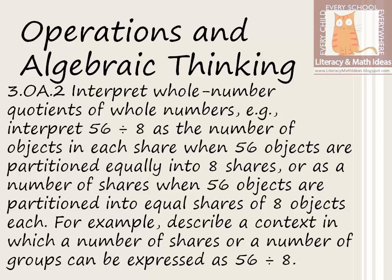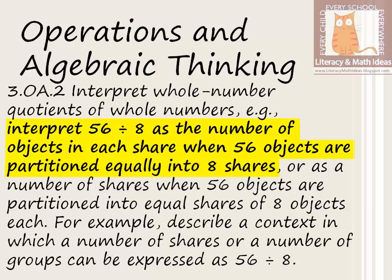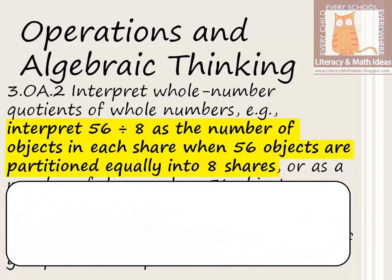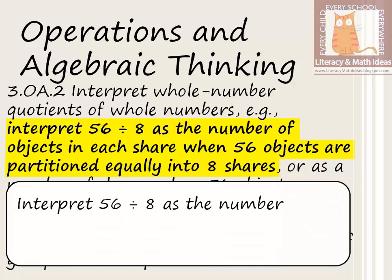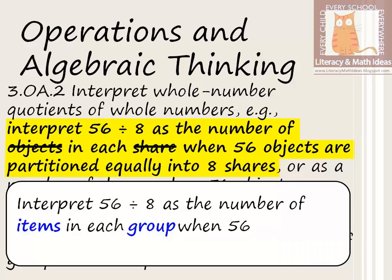Let's use the division problem from the standard — 56 divided by 8 — to explain these two approaches. The first approach is right here in the standard. I'll reword it slightly, because the wording, although accurate, may be a little confusing: interpret 56 divided by 8 as the number of items in each group when 56 items are divided equally into 8 groups.